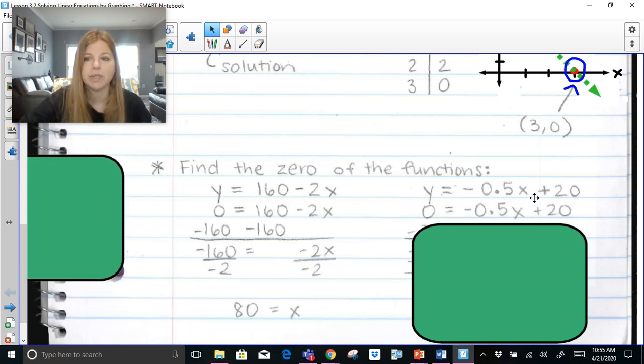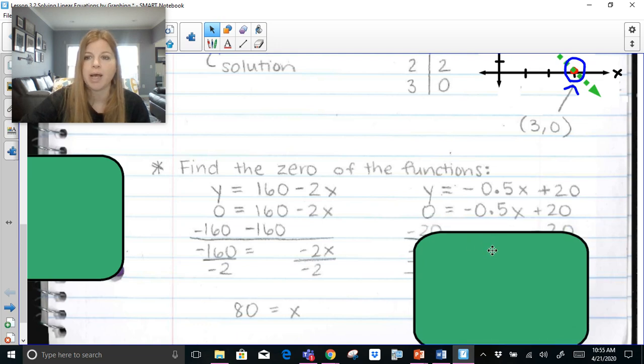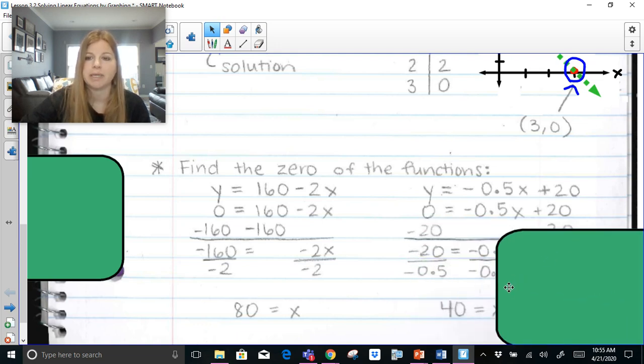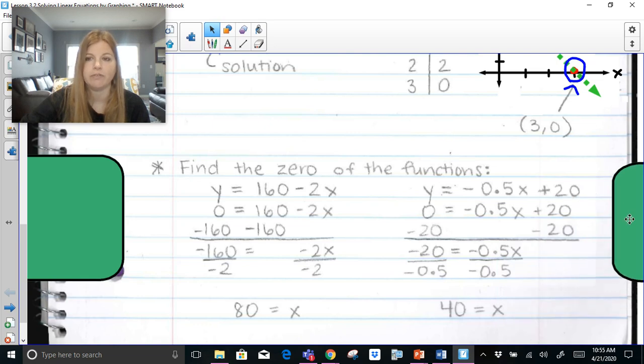If I took this equation and I wanted to find the zero, finding the zero means to find the x-intercept. To find the x-intercept, you plug in 0 for y. We would subtract 20 on both sides, and then divide both sides by -0.5, and you would get 40. If I was to graph the first function, it would cross the x-axis at 80. If I was to graph this function, it would cross the x-axis at 40.